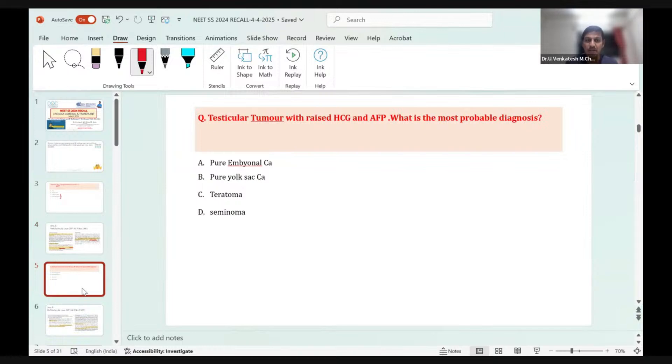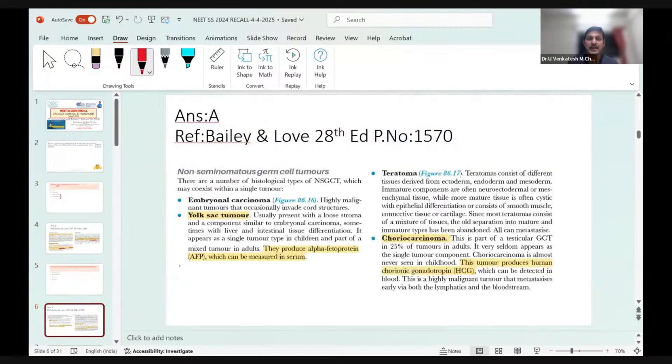Next question is on testicular tumor. When it comes to urology, questions are evenly distributed across all uro-oncology. There was a question on testicular tumor with raised HCG and AFP. What is the most probable diagnosis? The options were pure embryonal carcinoma, yolk sac tumor, teratoma, and seminoma. The answer is A, embryonal carcinoma. Embryonal carcinoma is likely to produce both HCG and AFP.